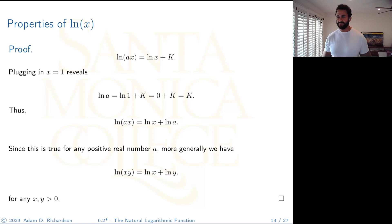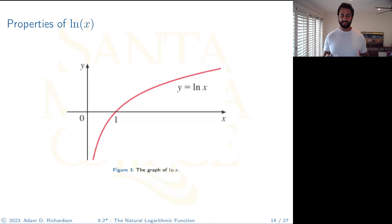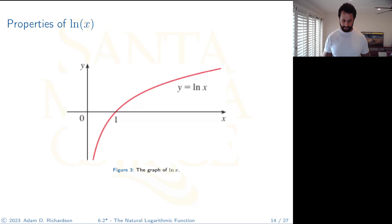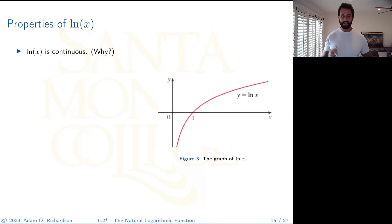Here's the graph of the natural log function — this should look familiar from pre-calculus. Notice that ln(1) = 0, when x is between 0 and 1 the output is negative, and when x is greater than 1 the output is positive.